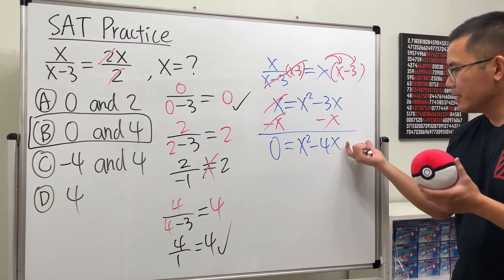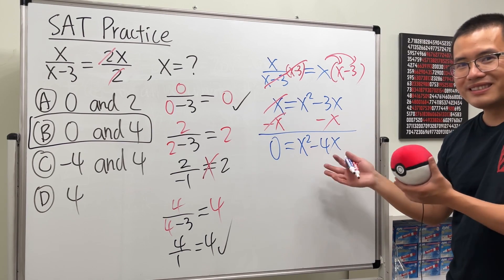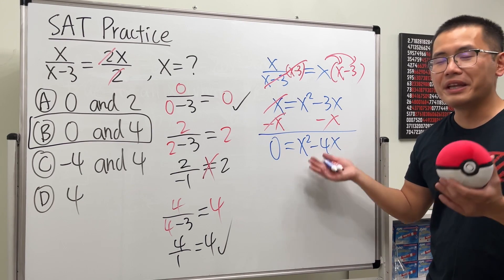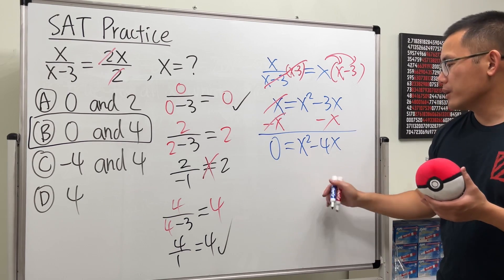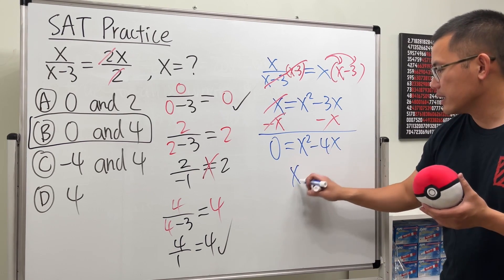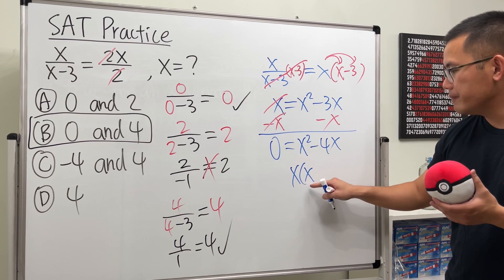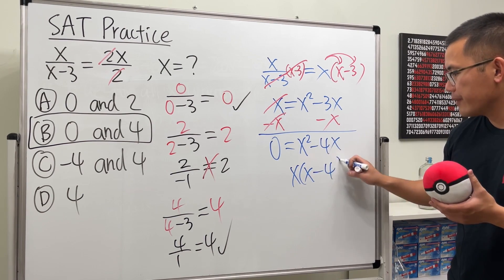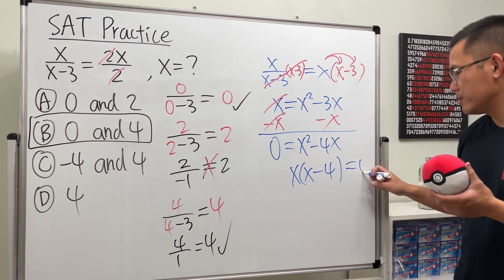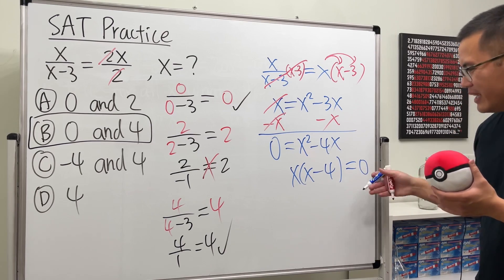It looks kind of weird because there's no like another number, but this is still a quadratic equation. This is actually factorable as well. What we can do is we can just factor out an x and then we will get just x here and then minus four. And let's put a zero right here because we are more used to having zero on the right hand side.